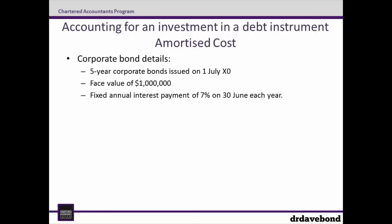The debt instrument in question is a 5-year corporate bond issued on the 1st of July X0. It has a face value of $1 million and pays a fixed annual interest payment of 7% on the 30th of June each year. A bond is like an IOU between the borrower — the issuer of the bond — and the investor, the lender. Whoever invests in this instrument will receive $70,000, which is the 7% multiplied by the face value of $1 million, at the end of each year for 5 years, as well as the $1 million face value of the bond at the end of 5 years.